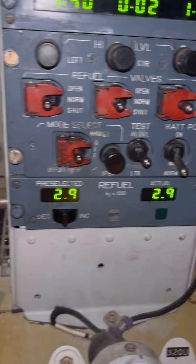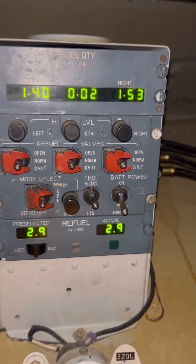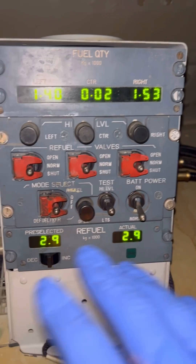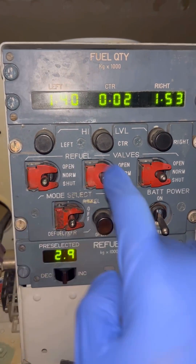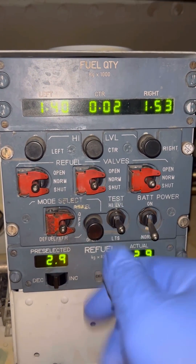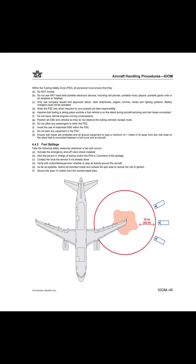Today let's refuel an Airbus A320 from the main refueling panel and from the cockpit. First, we make sure we go through all the safety procedures. As we all know, fuel is highly flammable and working around fuel is a very risky procedure.